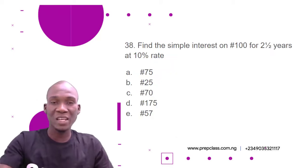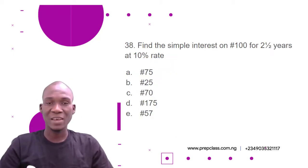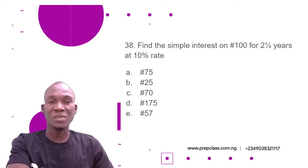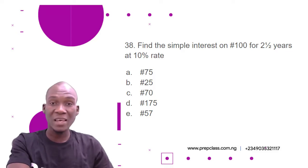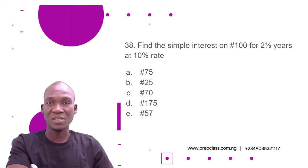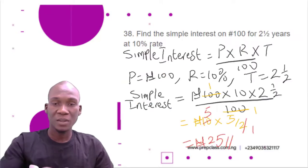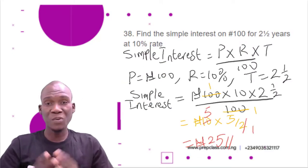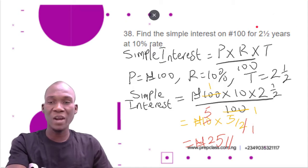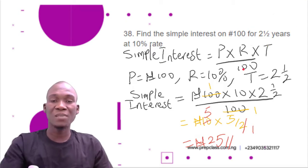Now question number 38: Find the simple interest on 100 naira for two and a half years at 10% rate. Options are: A) 75 naira, B) 25 naira, C) 70 naira, D) 175 naira, E) 57 naira. Simple interest is given by the formula: Principal × Rate × Time ÷ 100.